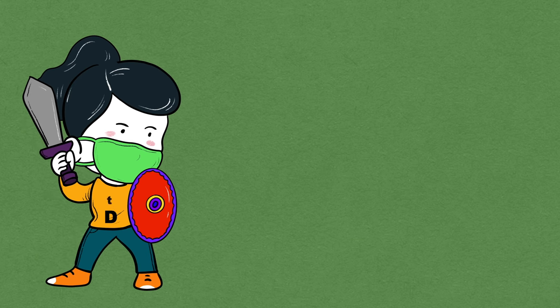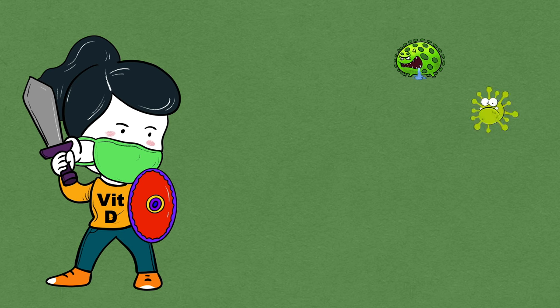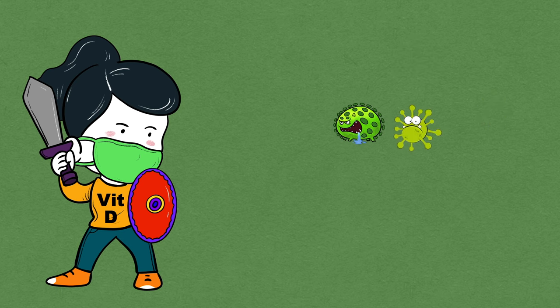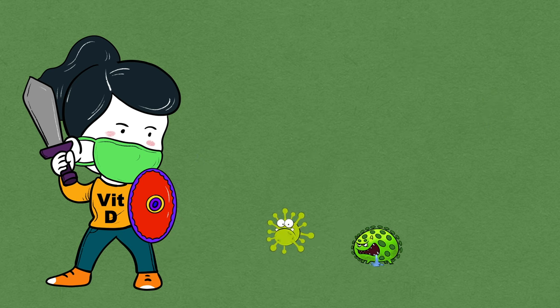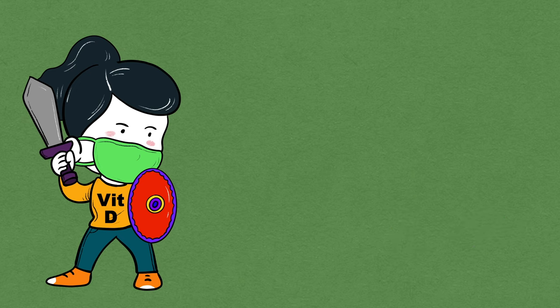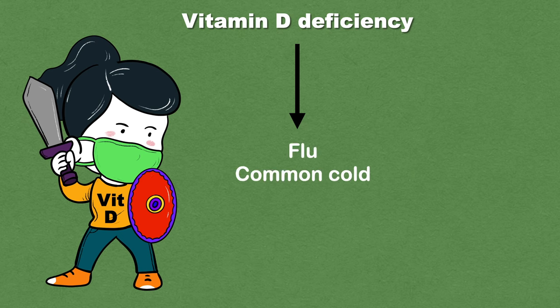Vitamin D helps in fighting off infections as it is directly involved in supporting immune cells. So when there is deficiency of vitamin D, your immunity decreases and you start falling ill frequently. You may catch flu and cold-like symptoms very often and this can certainly be a sign that your vitamin D levels are low.